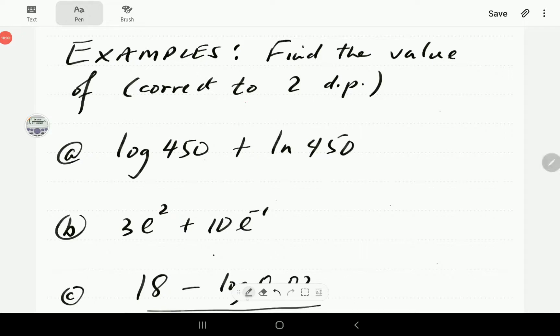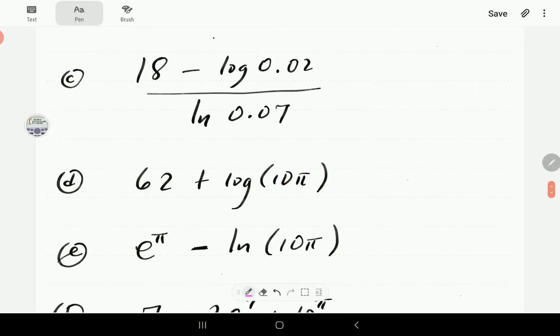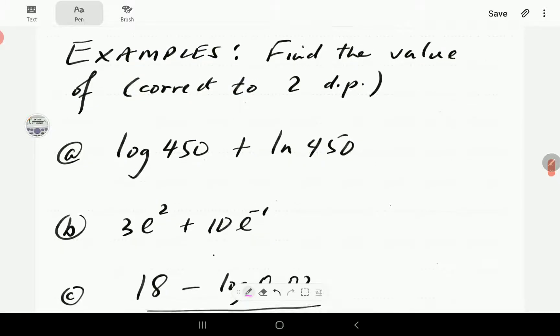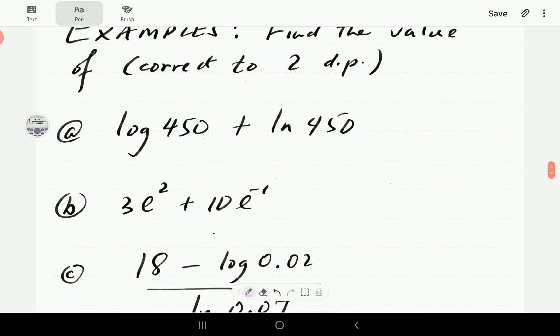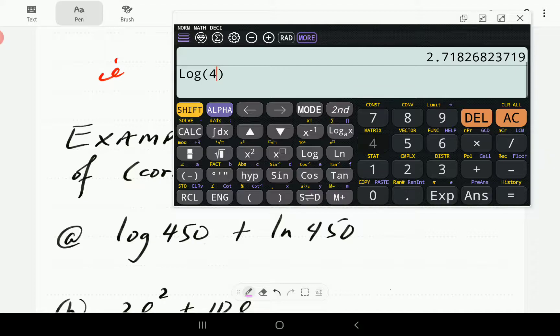Here are a few examples involving the natural log, the common log, the number e, and some other constants like pi. We're going to do the first three examples, and then we'll give you an opportunity to work through the other three. I want to find the value of each one of these correct to two decimal places. In the first instance, we have log of 450 plus ln of 450, and this is giving us 8.76.